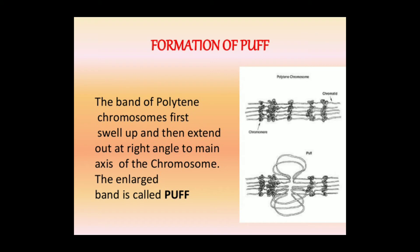Formation of puff: these chromosomes have a puff-like structure. The bands of polytene chromosomes first swell up, then extend out at a right angle to the main axis. The enlarged band is called a puff, and these are formed due to the swelling up of the bands.